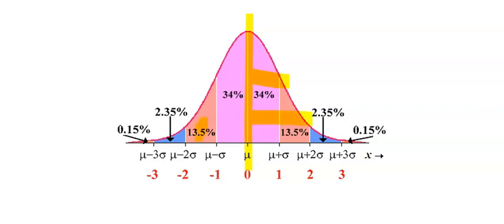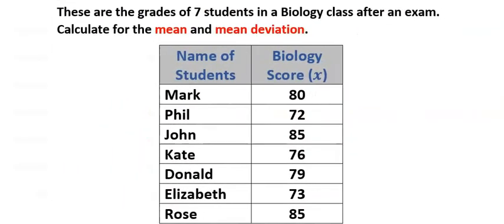Also, the percentage of each distance can also be calculated. To understand mean deviation, consider this question. These are the grades of seven students in a biology class after an exam. Calculate for the mean and mean deviation.